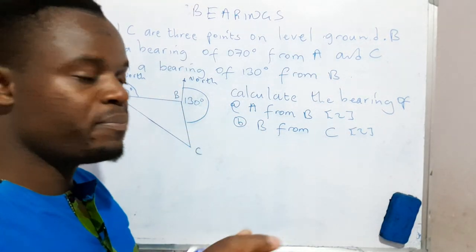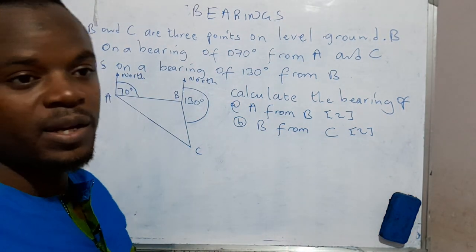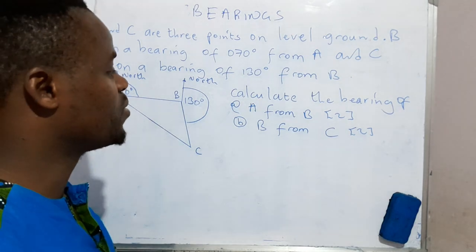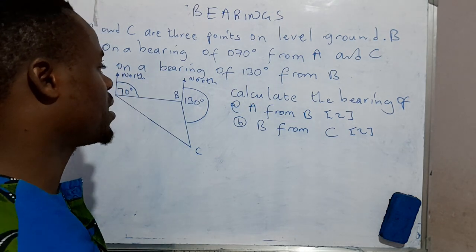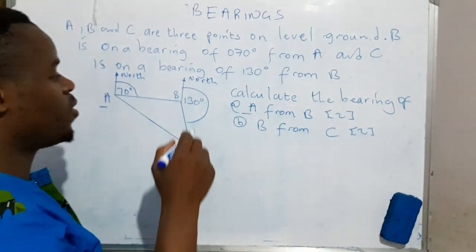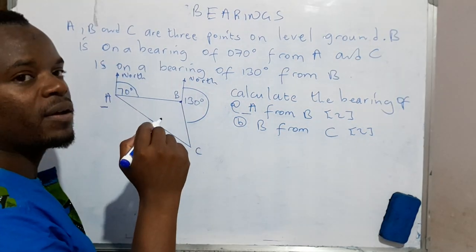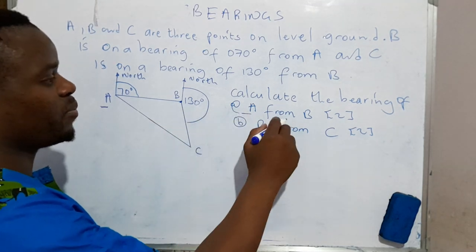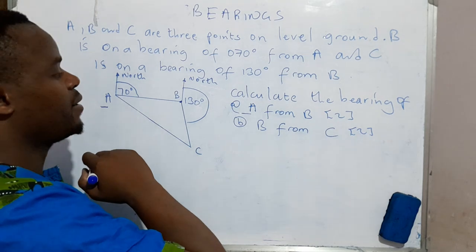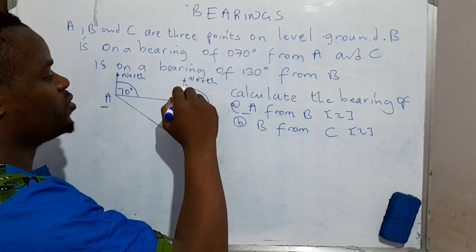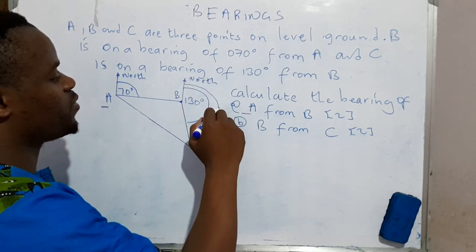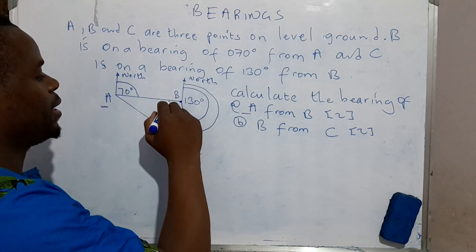Calculate the bearing of A from B. So the word 'from' is of great significance when you're dealing with bearings. You're looking at the bearing of A from B, so you go to the point B, that's from B, and then you draw the north, and then you have to draw an angle that you're looking for, that's from B to A.